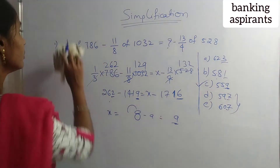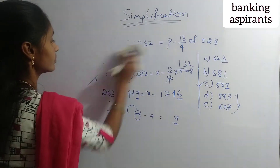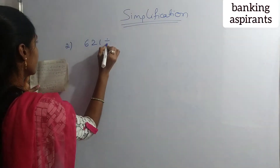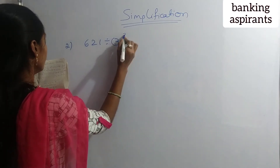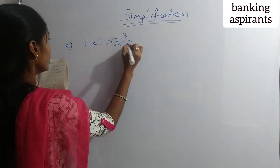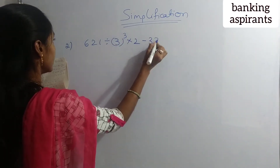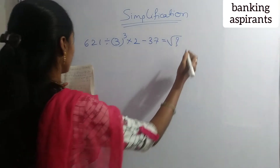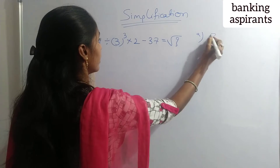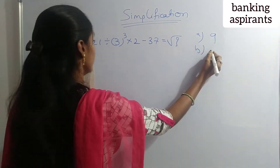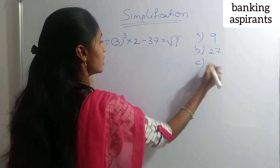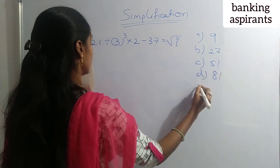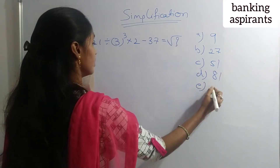Next question, second: 621 divided by 3 cubed into 2 minus 9, and 37, equals root x. Options are: A) 9, B) 27, C) 51, D) 81, E) 72.